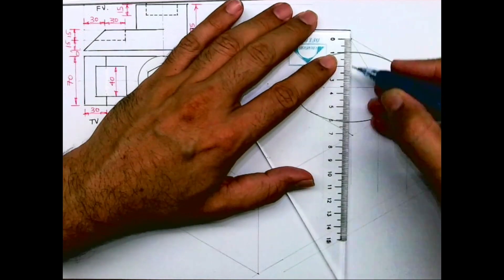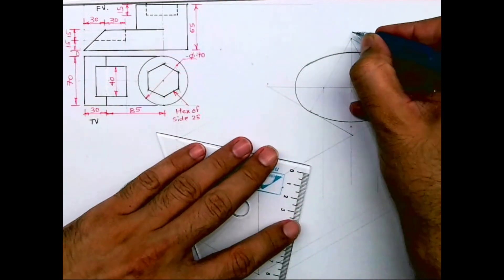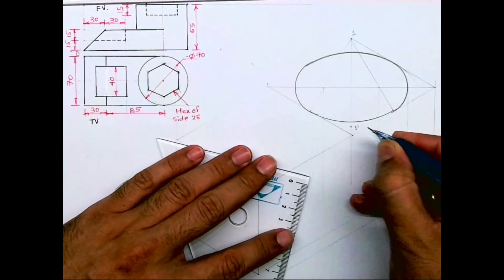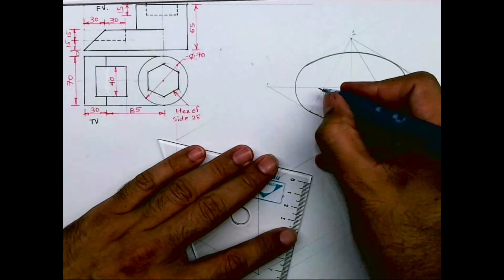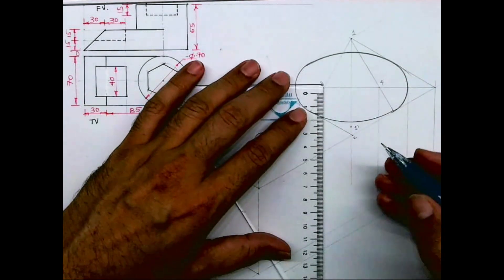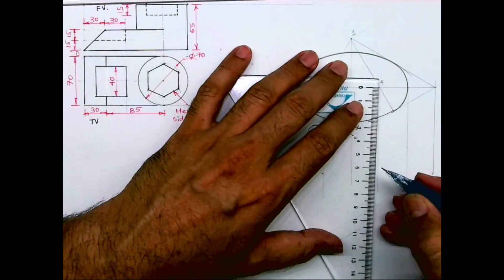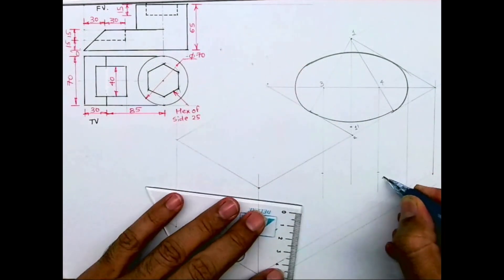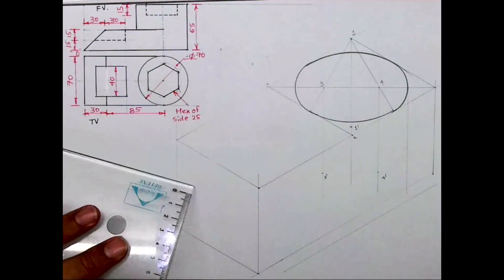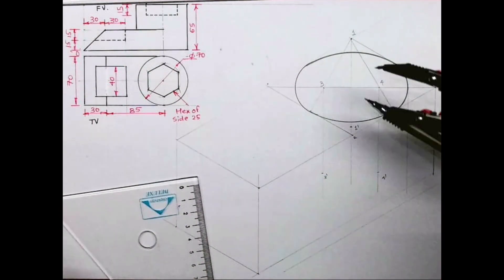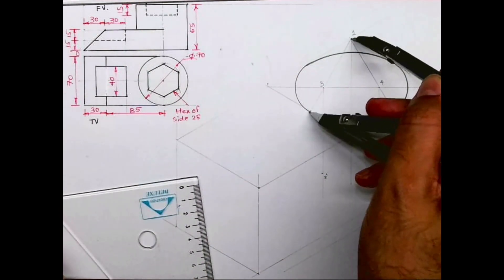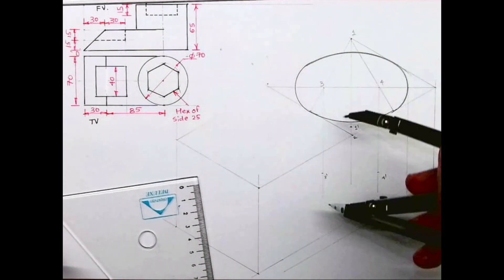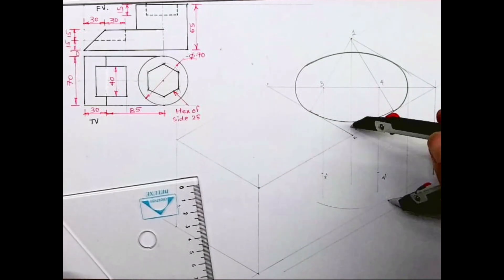So what I can do: I can mark this point down by 65. Let's say this is point 1, so this is 1 dash. This is 2, this is 3, this is 4. So I'll take point 3 also down by 65 and point 4 also down by 65. That is 3 dash and 4 dash. Now take 1 to 2 original radius, and from 1 dash you can draw arc.